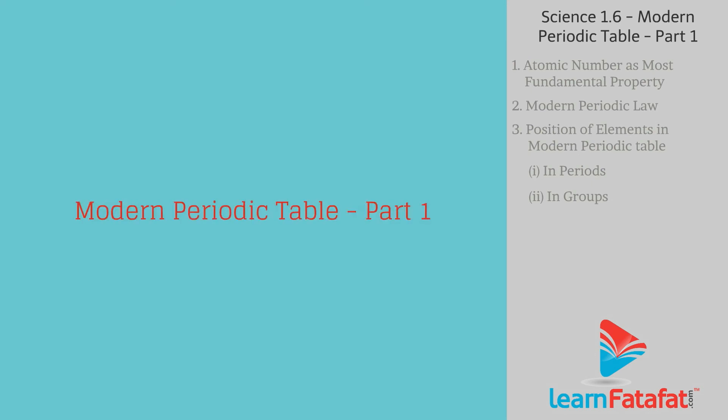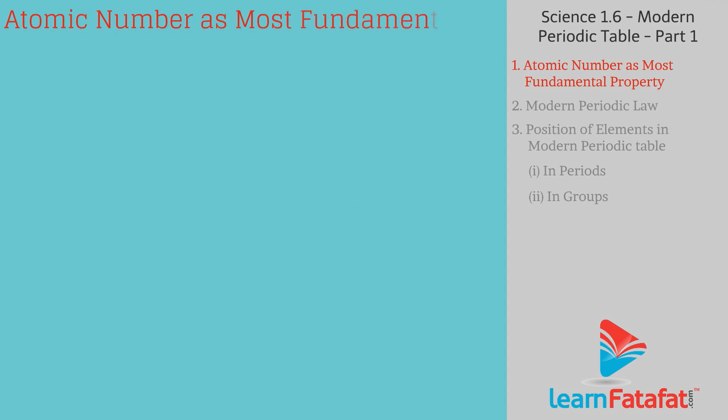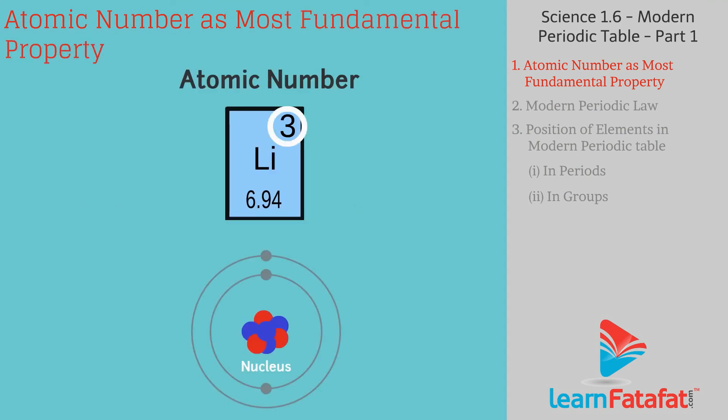Atomic number is the number of protons in the nucleus or the number of electrons revolving around the nucleus.